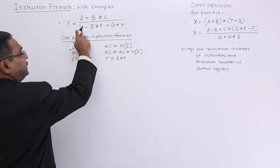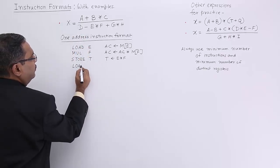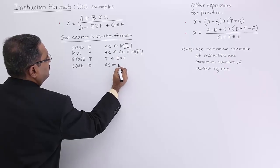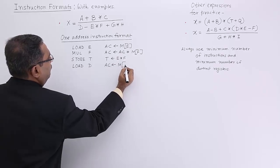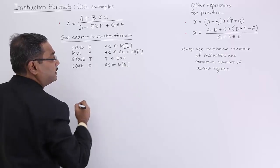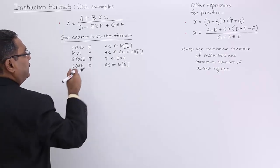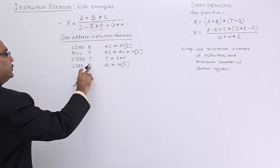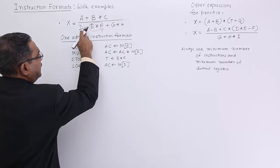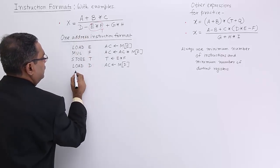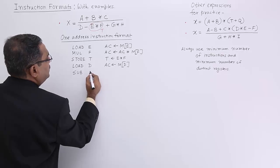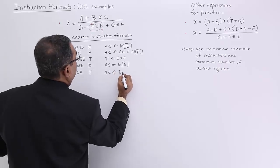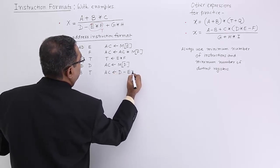Now I shall be loading D: LOAD D. The accumulator is getting initialized with the memory content of variable D. I have kept E*F in t. Now go for SUB t. The accumulator is getting initialized with D minus E*F.